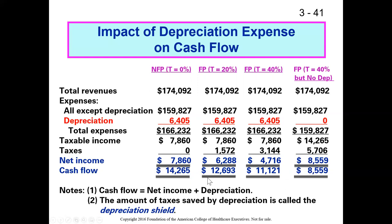Looking across the columns, the best outcome is the not-for-profit, which paid no taxes at all — $7.8 million plus $6.4 million gives $14.2 million in cash flow. Next best is the 20% tax case, then 40%. In those cases, depreciation provided a shield — what we call a depreciation shield — meaning the organization paid less taxes as a result of having depreciation.